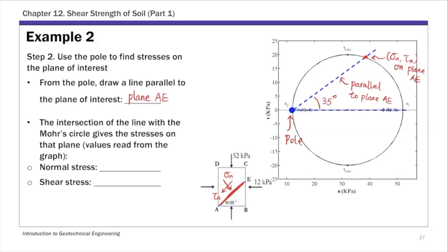That's how you find normal and shear stresses on plane AE using the pole method. The values are read directly from the graph: normal stress is about 40 kPa, and shear stress is about 19 kPa. This is a graphical method to determine stresses. You can also use normal and shear stress equations instead. Either way, you'll get approximately the same results.